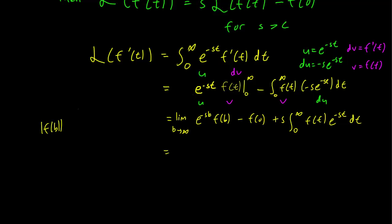f(b) is less than M e^(ct), and c is smaller than s. So this is going to be equal to M e^((c-s)b). So as b goes to infinity, this is just going to be 0, since c minus s is negative.